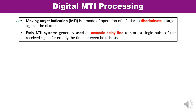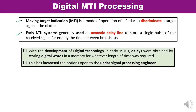Early MTI radar systems generally used acoustic delay lines. Delay lines were used because there was a requirement to introduce a certain delay. Acoustic delay lines store a single pulse of the received signal for exactly the same time between the broadcast pulses, introducing the necessary delay.